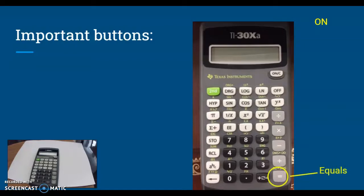Down there is obviously the equals. On, off, and clear is the same button. Then notice this plus and minus key on the bottom right of your number pad. This will allow you to toggle between negative and positive numbers. We'll use that when we're using negative exponents, for example.